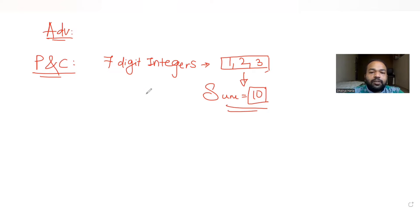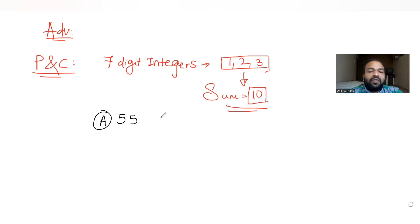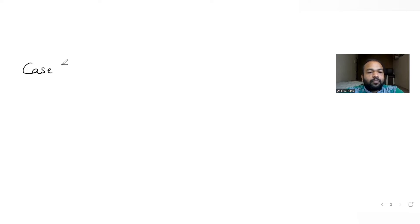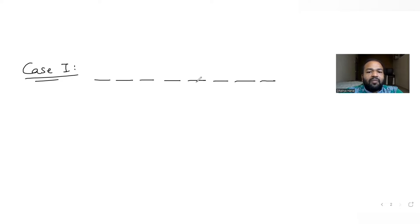So we need to find how many such seven-digit integers exist where the sum becomes 10. The options given to us are 55, 66, 77, and 88. Let's try to form the seven-digit integers using one, two, and three. In case one, I have seven digits available.